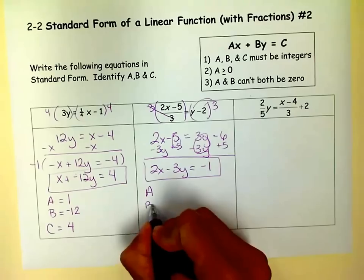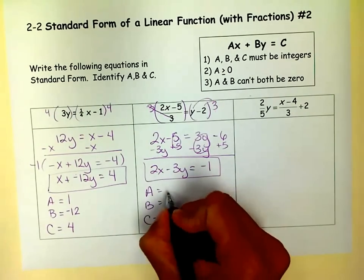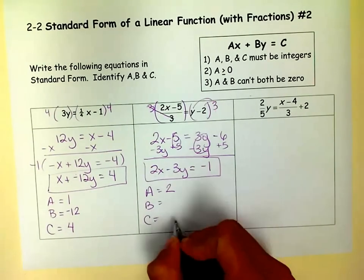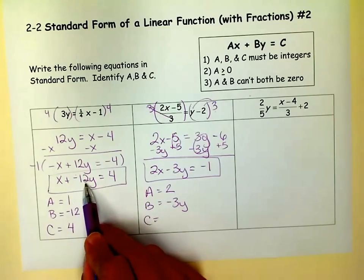Now to find A and B and C. Simply A is in front of the x, the coefficient of the x. Negative 3 is the coefficient of the y. You'll notice that I just said minus 3 here. And there was a plus and negative 12.